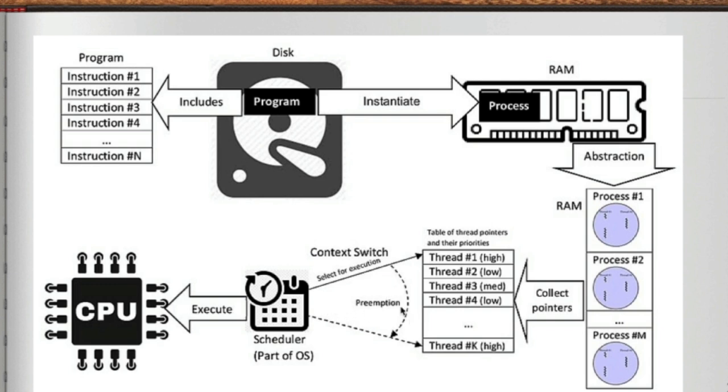This is the preemption. Preemption is basically acquiring a resource from one process to another. And this is your scheduler which is part of the operating system. The process gets executed by the CPU. So that's kind of a basic information about how threads and how your processes are working.